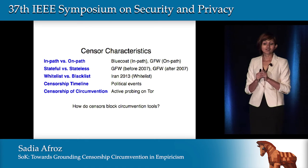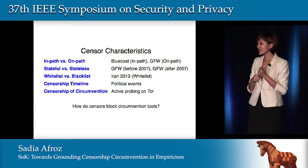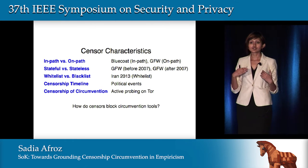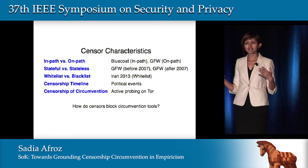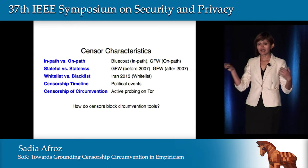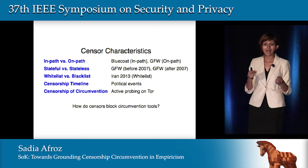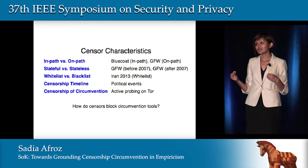In the 31 measurement papers we studied, we noticed four different characteristics of censors. A censor could be an in-path or on-path censor. An example of an in-path censor is Bluecoat, used by Syria and Qatar. An in-path censor can drop packets but is limited by processing at line speed. The Great Firewall of China is an on-path censor — a passive sensor that can do much more intensive processing, but cannot drop packets; it can only inject packets. So attacks that rely on dropping packets will not work in China.